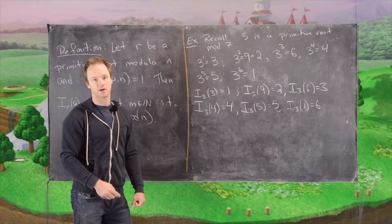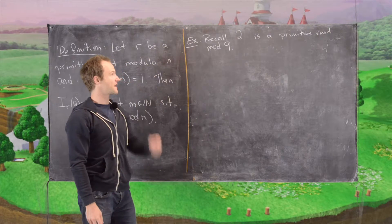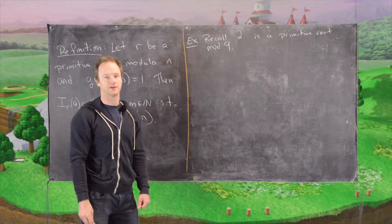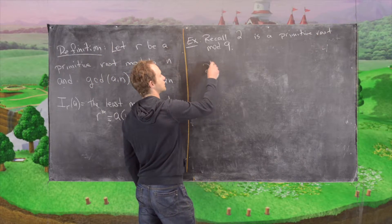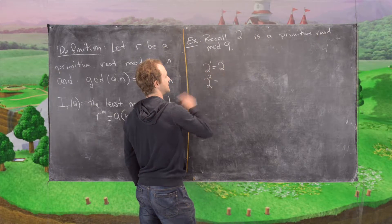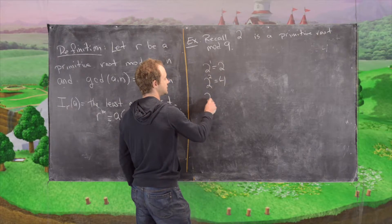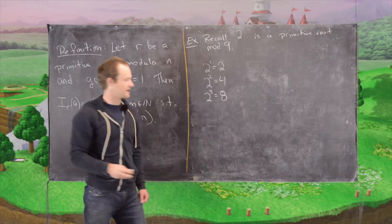Okay, so I'll clean up the board and we'll look at another example real quick. In this next example we want to recall that 2 is a primitive root modulo 9. Now let's look at the powers of 2. So 2 to the 1 is obviously 2. 2 squared is equal to 4. 2 cubed is equal to 8 which is negative 1 mod 9.